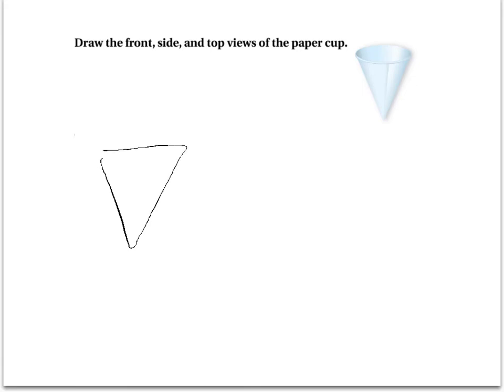And if we turned it and looked from the side, what would we see? Triangle? Another triangle. And then the last thing, if we look from the top, what kind of shape would we see? A circle. Very good. Okay. We will see you all tomorrow. Say bye, Emma. Bye.